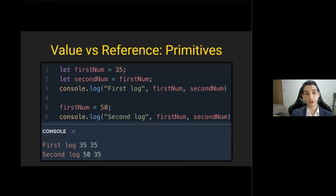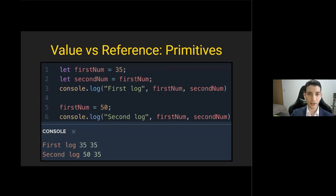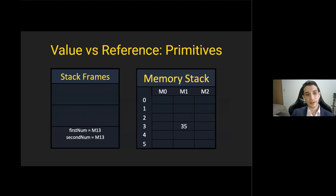All variables are, one way or another, stored in the stack. If they're primitives, their value is directly stored; if they're non-primitives, a reference to their address in the heap is stored instead. This is also why variables are handled differently — by value if they're primitives, or by reference if they're objects. For example, if we declare firstNum with value 35, then set secondNum equal to firstNum, both variables point to the same memory cell M13, and console logging them both shows 35.